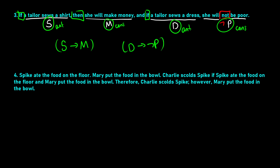All of these things are conjoined by the AND in the middle, so we can conjoin these two conditionals with AND. Our final result is (S → M) AND (D → NOT P): if a tailor sews a shirt then she will make money, and if a tailor sews a dress then she will not be poor.